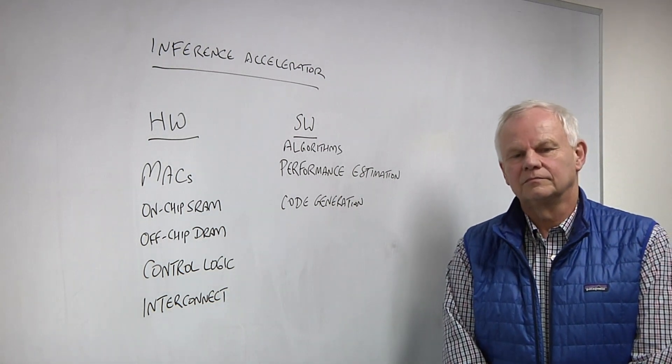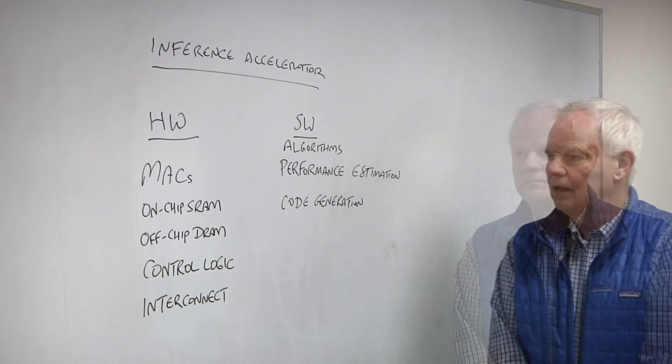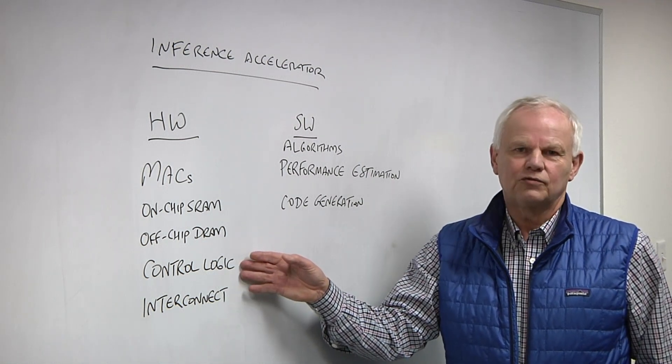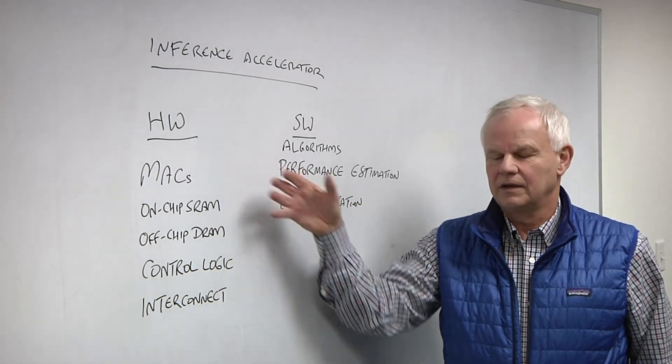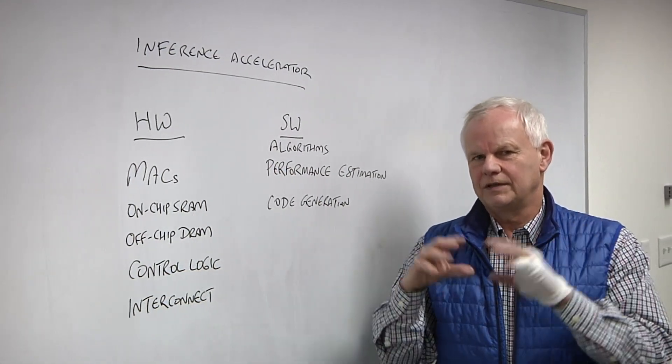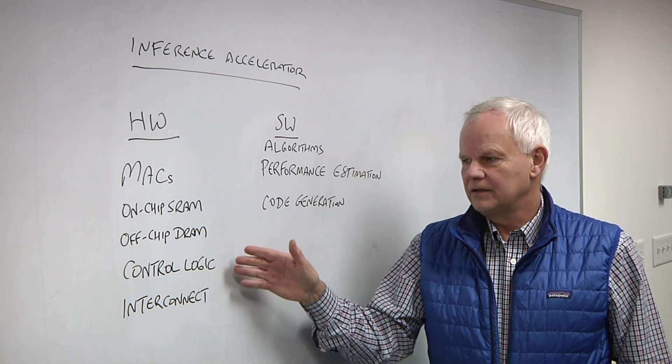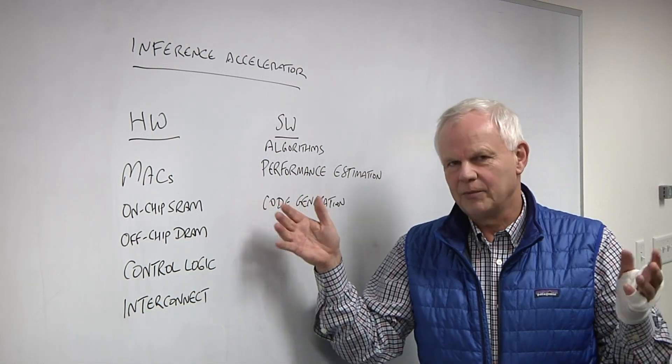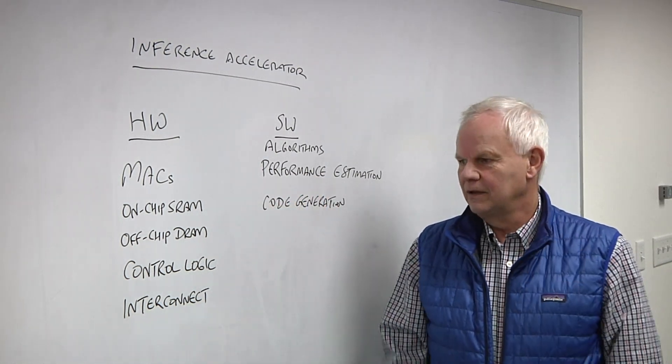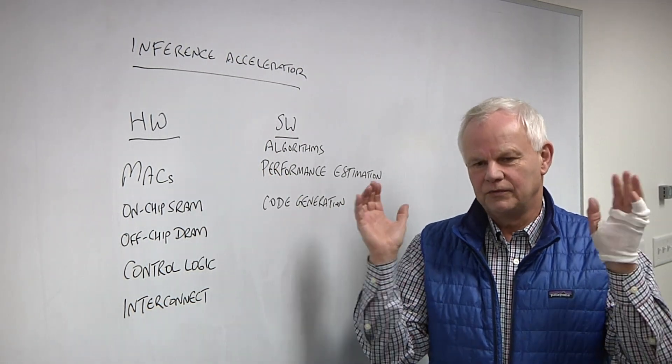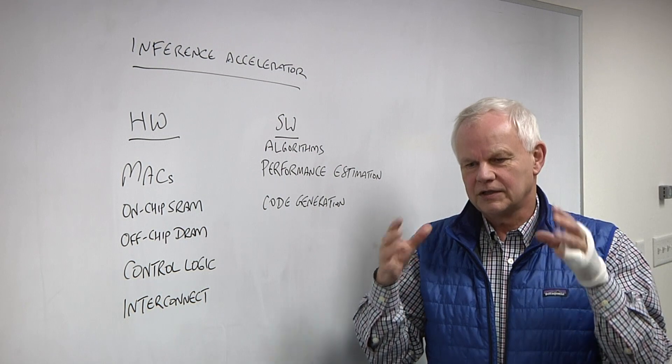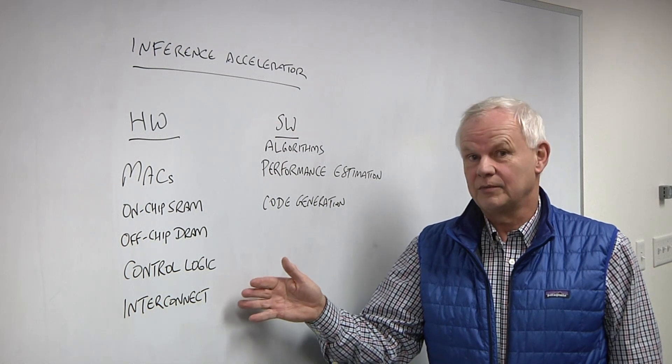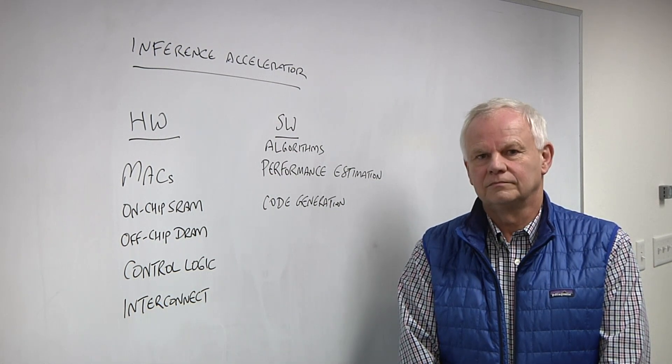It's all programmable, depending on your definition. The programming is really of the control logic. The control logic is the thing that takes the units and orchestrates how they work together to get things done. So, arguably, this is where the programmability is primarily existing. The interconnect in some chips is programmable like in ours. So, where does the software fit in and how does that layer across this?